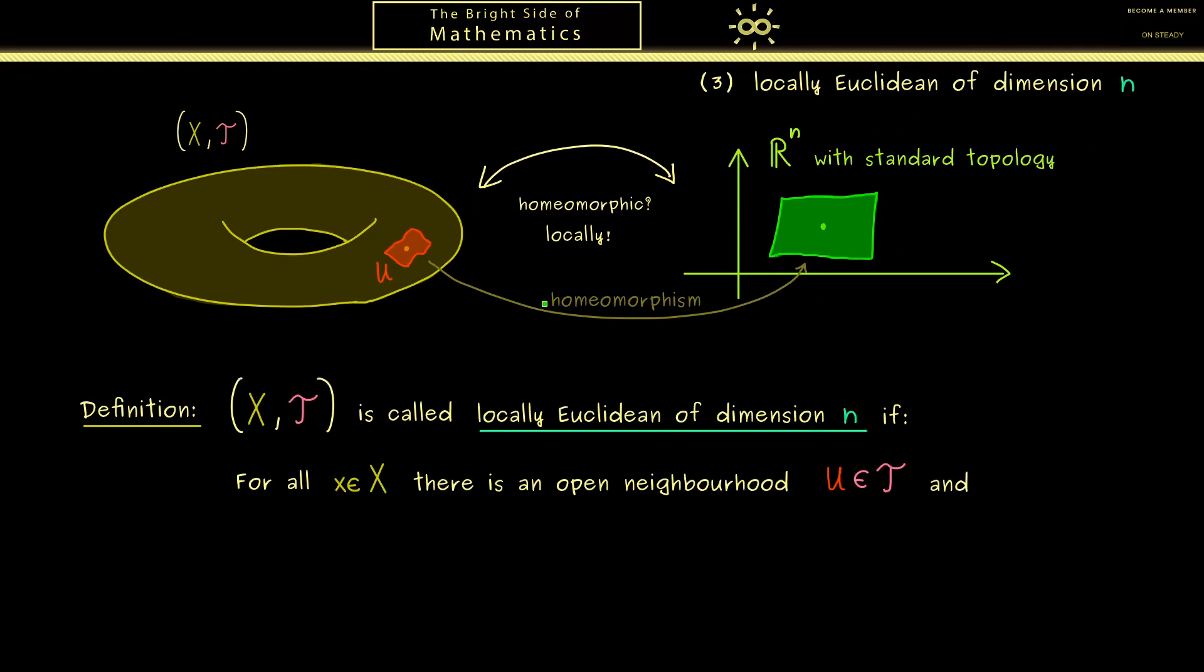And then the claim is that we find a homeomorphism we call h. So this is a nice continuous map that sends our open set U to an open set on the right-hand side, and this one we just call U'. So you see, this is all we want: when we find such a one-to-one correspondence for all points in the topological space, we have a locally Euclidean space.